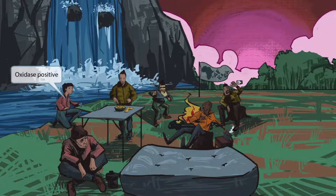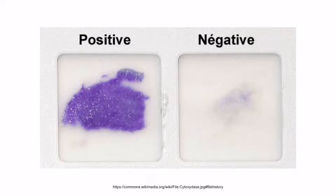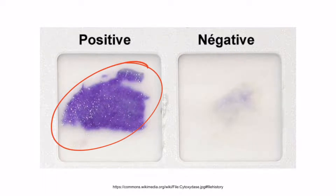We've added a girl to the scene who is wearing a blue necklace. This is here to help you remember that Vibrio cholerae is oxidase positive. This is an image of the oxidase test, which we covered in more detail in section 20, our Neisseria overview video. Recall that if the organism is oxidase positive, the disc will turn a blue or pink color. So remember: Vibrio is oxidase positive.